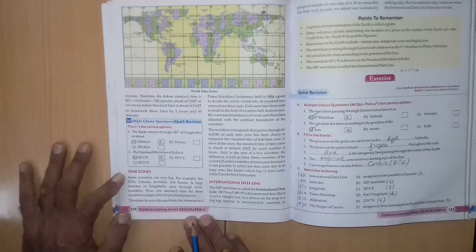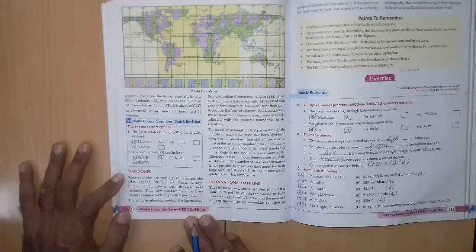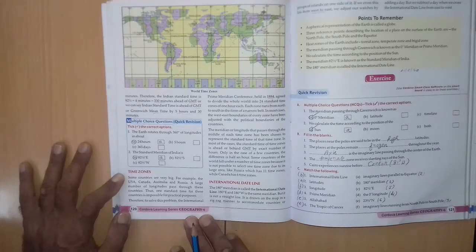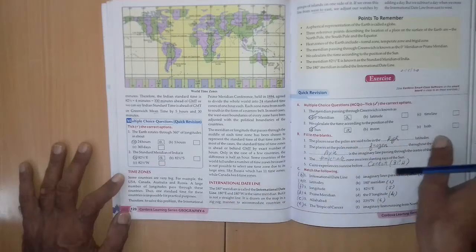2nd question, the standard meridian of India is A 82.5 degree east, B 82.5 degree south, C 82.5 degree west. Right answer is A 82.5 degree east.